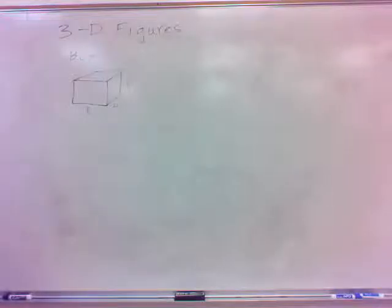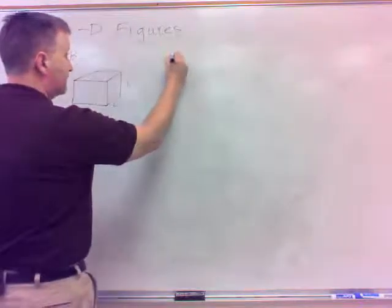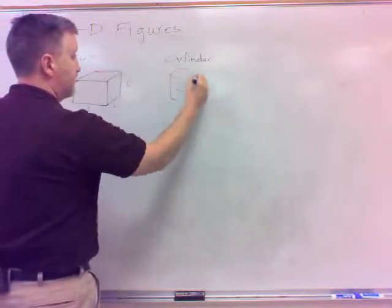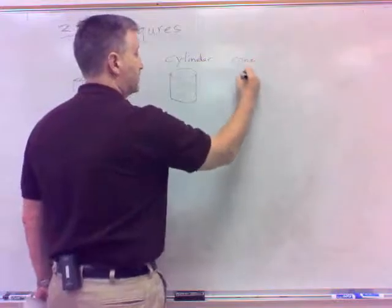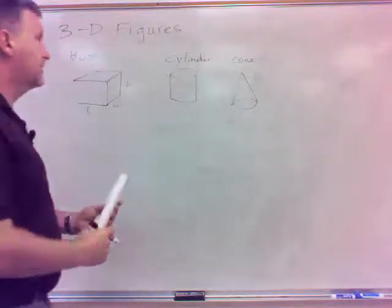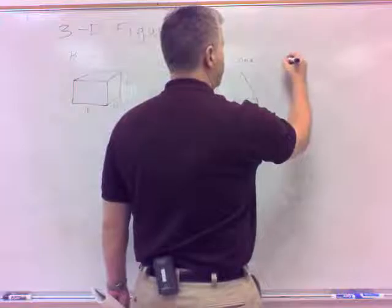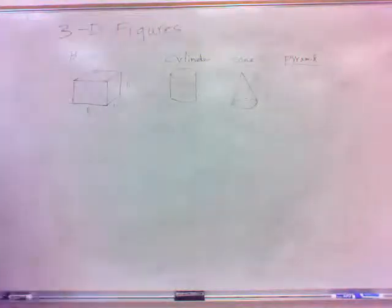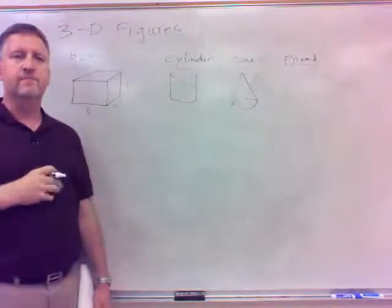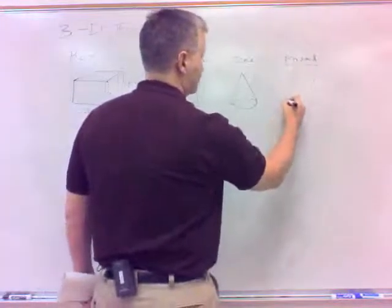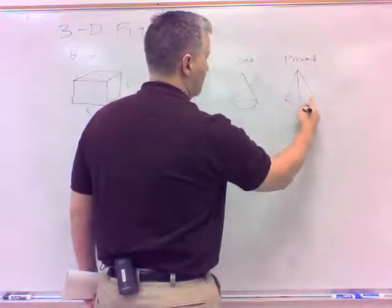Another one you might be thinking about is the cylinder. We'll deal some with those. We'll also do cones. And let me also focus a bit on the pyramid — another shape we'll talk about. When we think of pyramids, we usually think of the Great Pyramids over in Egypt, which is a good example.